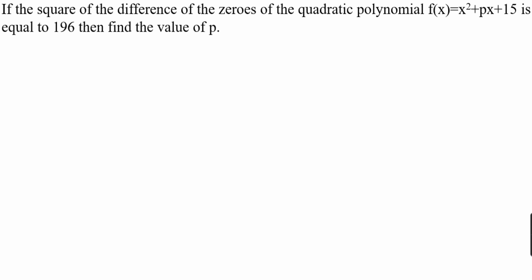Hi friends, welcome to my channel, Excellent Ideas in Education. Today we are going to learn about a quadratic polynomial problem. If the square of the difference of the zeros of the quadratic polynomial f(x) = x² + px + 15 is equal to 196, then find the value of p. So we need to calculate the value of p.